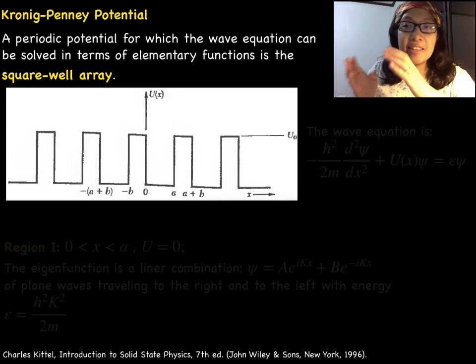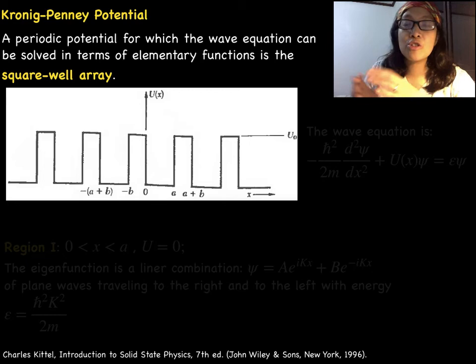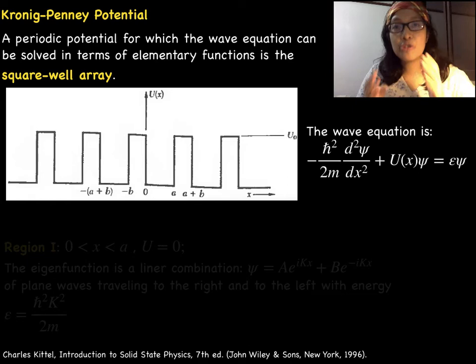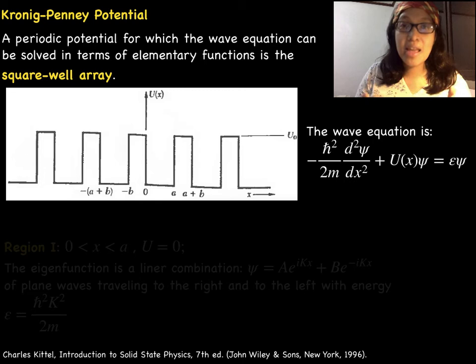Under the Kronig-Penney model, the potential model represents an idealized periodic potential of a one-dimensional crystal lattice. We start by setting periodic potential as a series of finite potential wells with finite potential barrier V₀ so that there is a possibility of tunneling. The wave equation or Schrödinger's equation is shown where U(x) is the potential energy and ε is the energy eigenvalue. There are two regions of interest here.